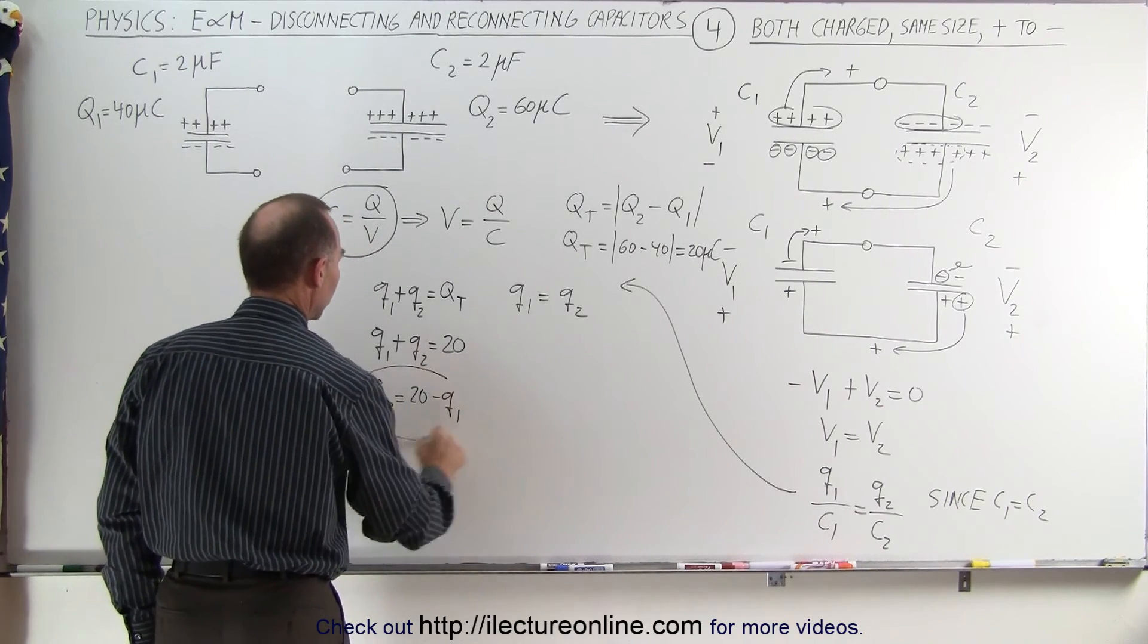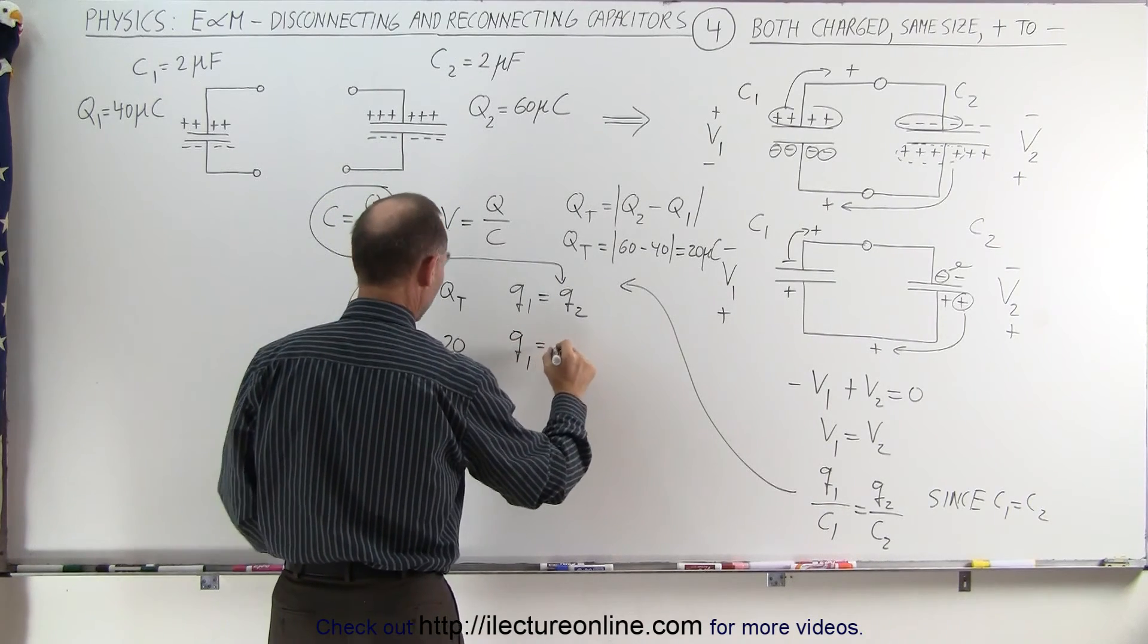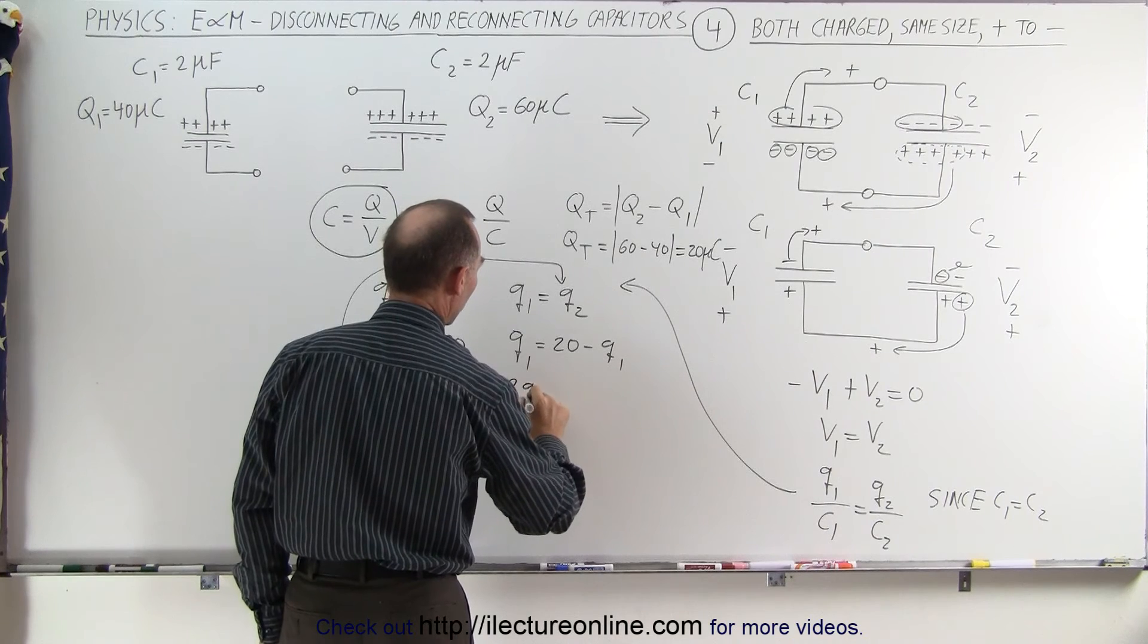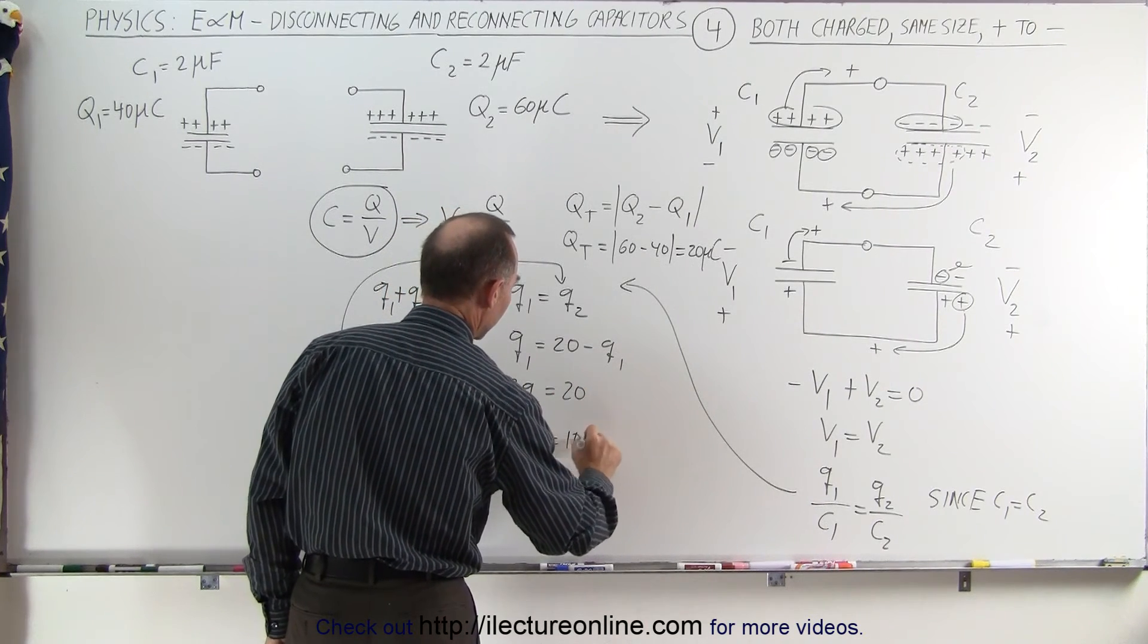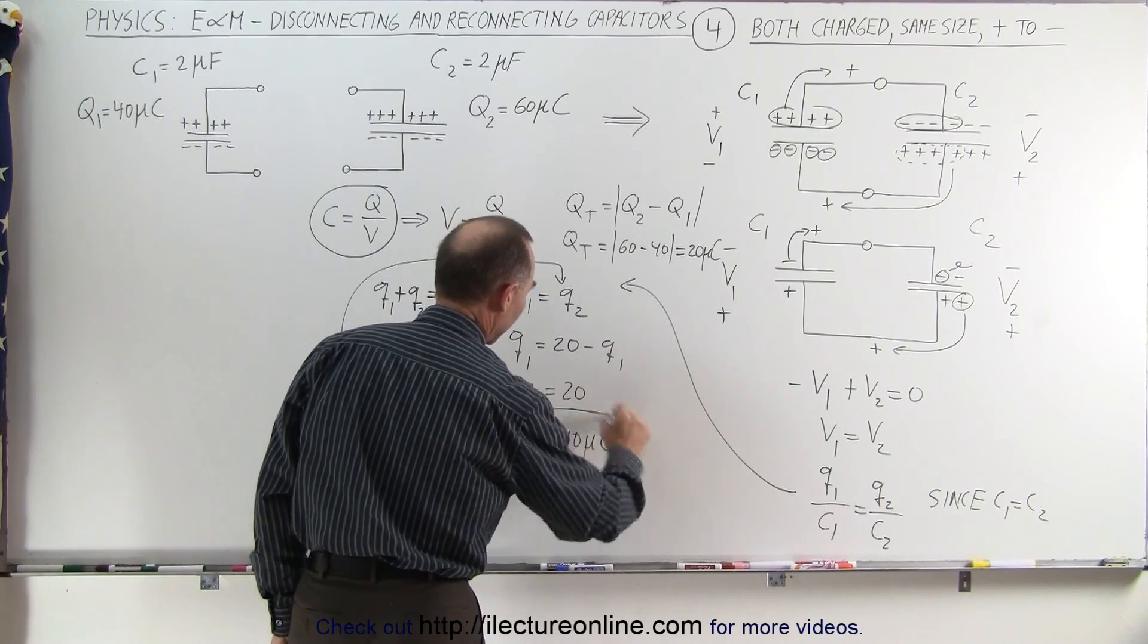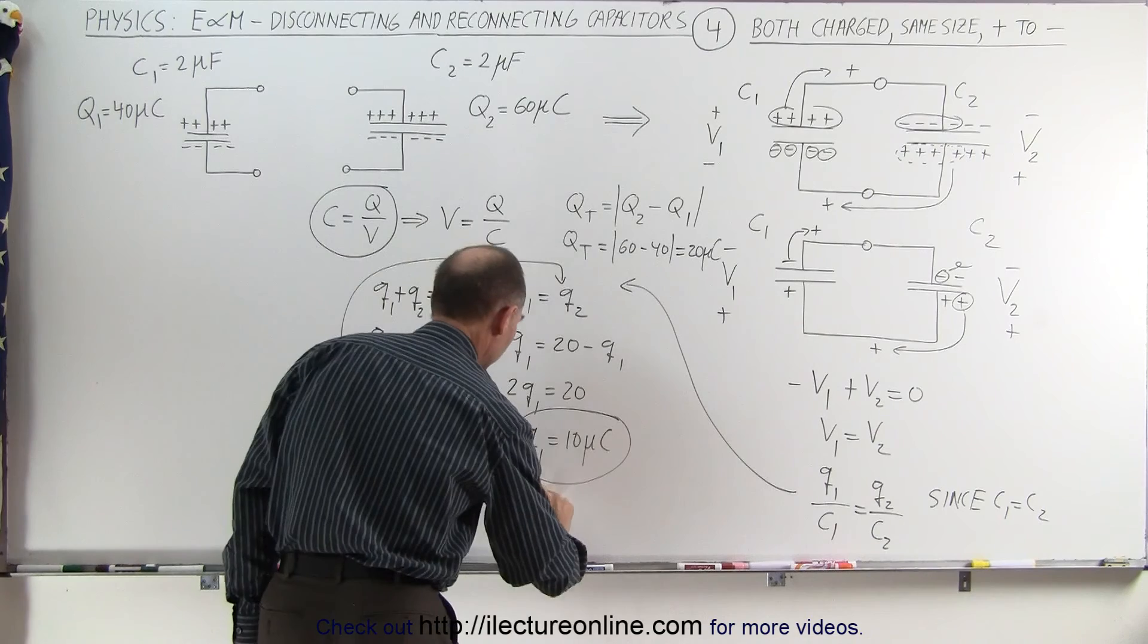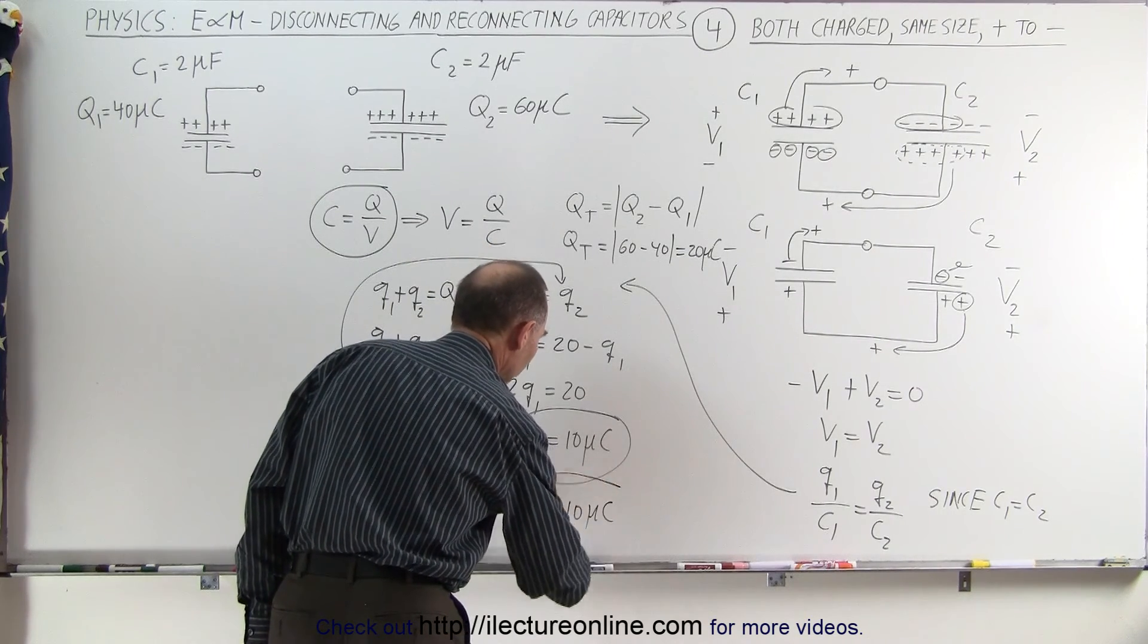We can substitute this into the equation, so Q1 equals 20 minus Q1, or 2Q1 equals 20, or Q1 equals 10 microcoulombs. Since Q1 equals Q2, that means Q2 is also 10 microcoulombs.